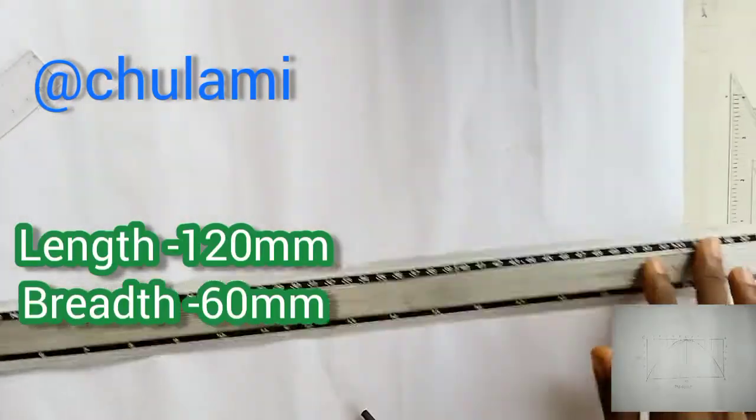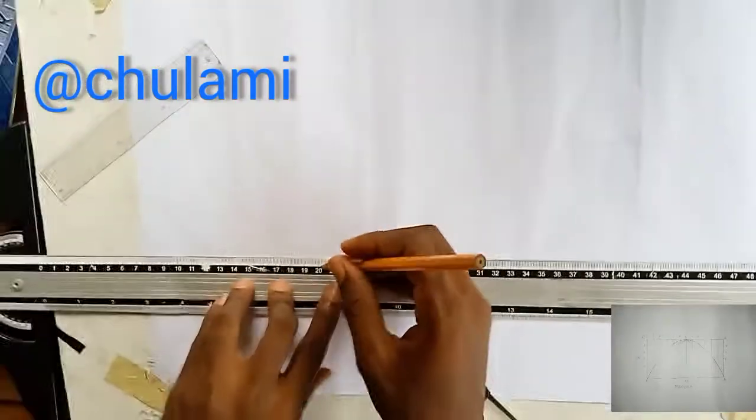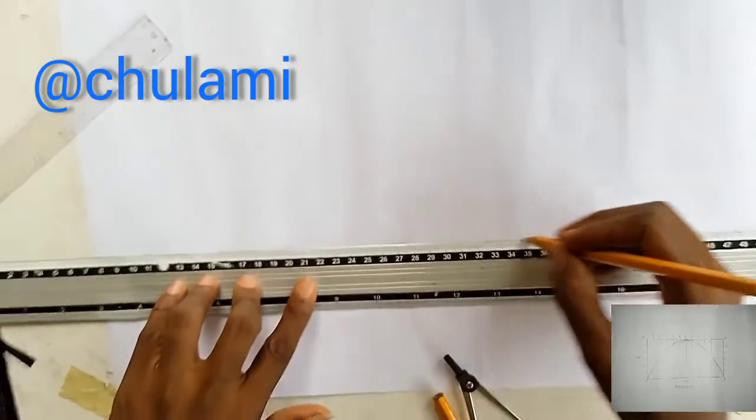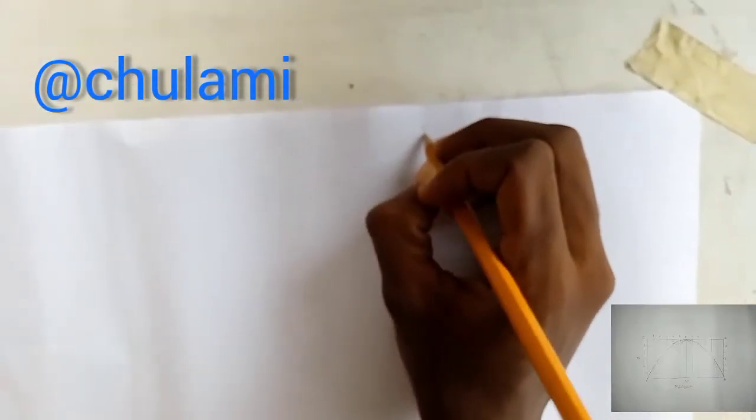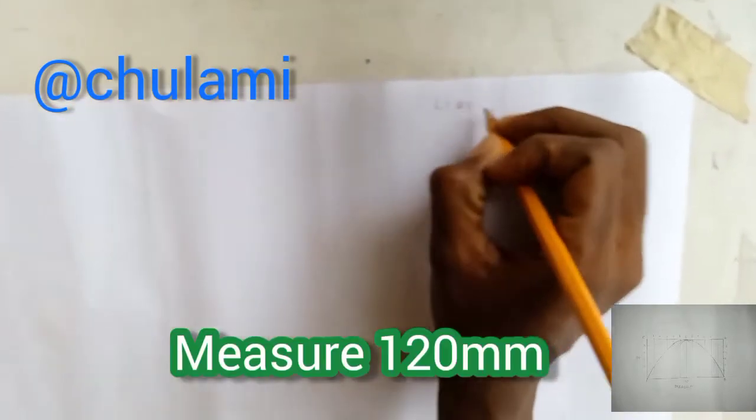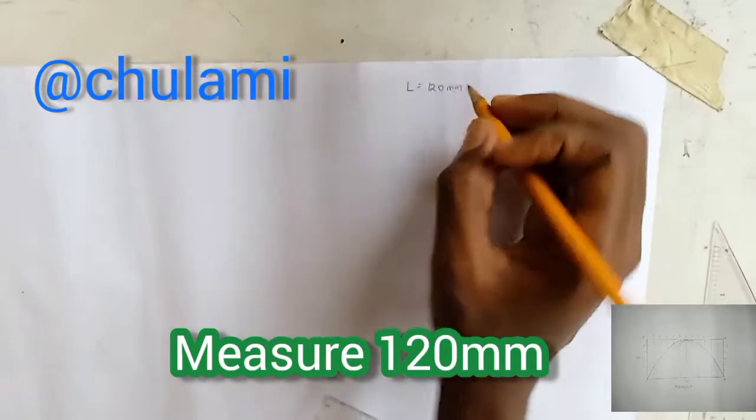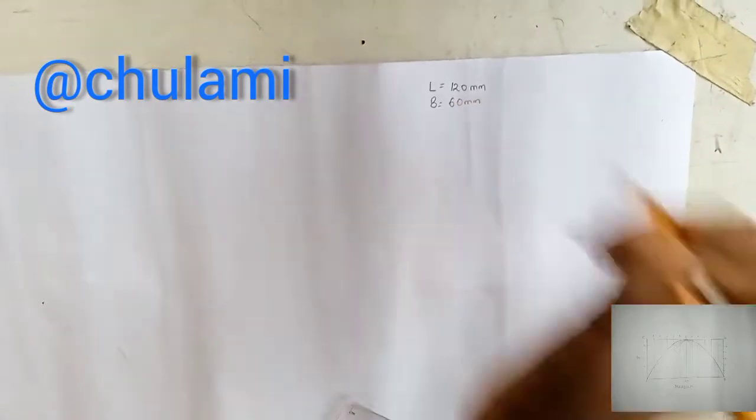So in drawing a parabola, the first thing to do is to draw a straight line. Let's make the line very long, a straight line. Now we're going to have a straight line. Now we are going to take the length. Let's take our measurements. Let's take length to be equal to 120 mm and then the breadth to be equal to 60 mm.